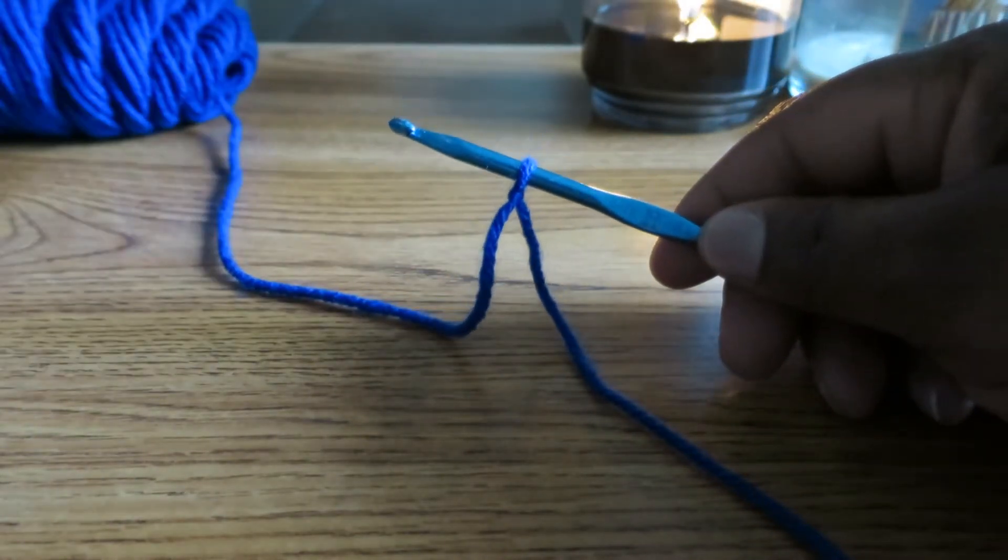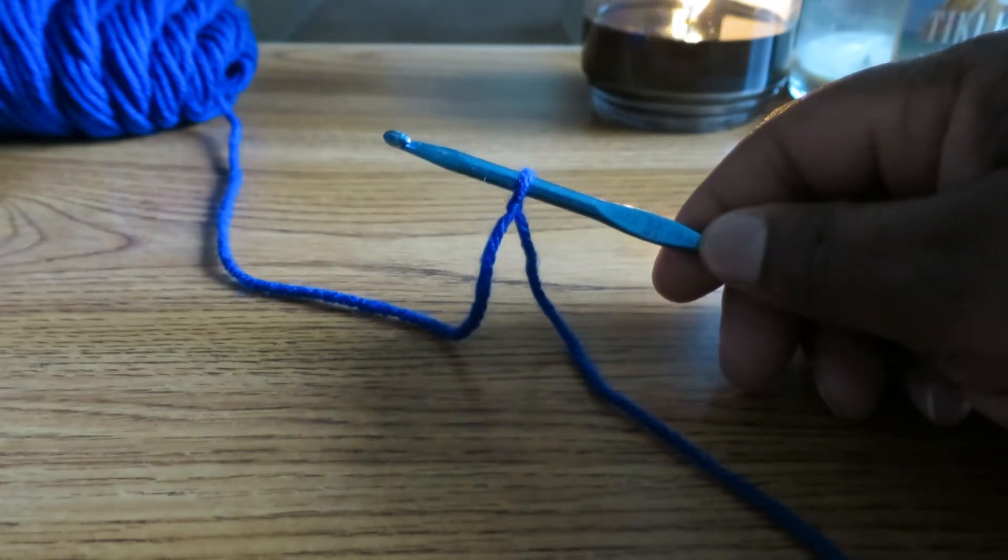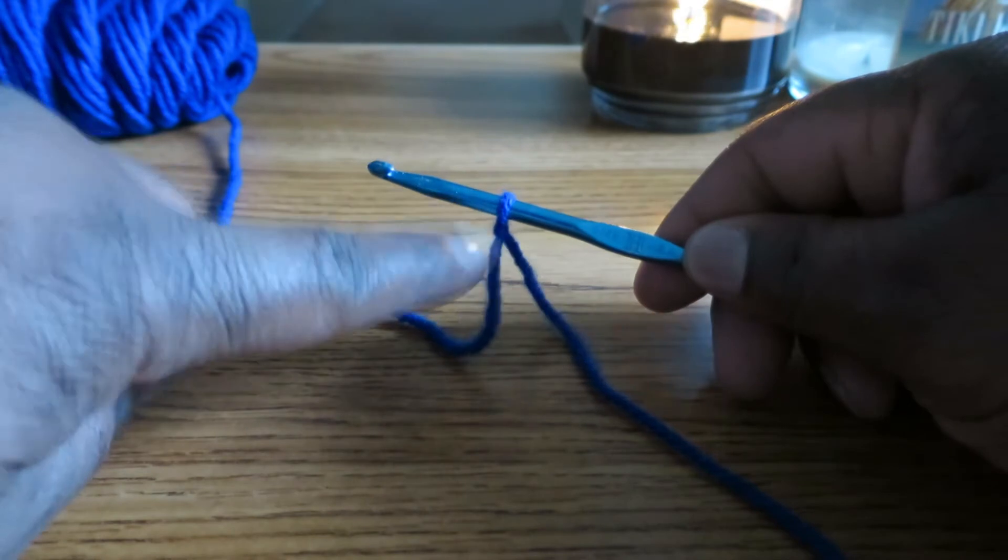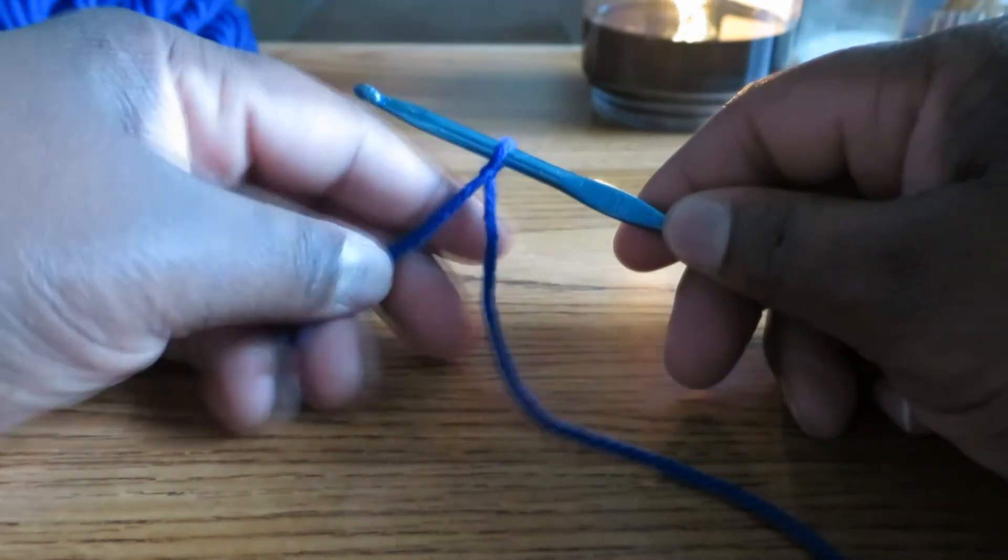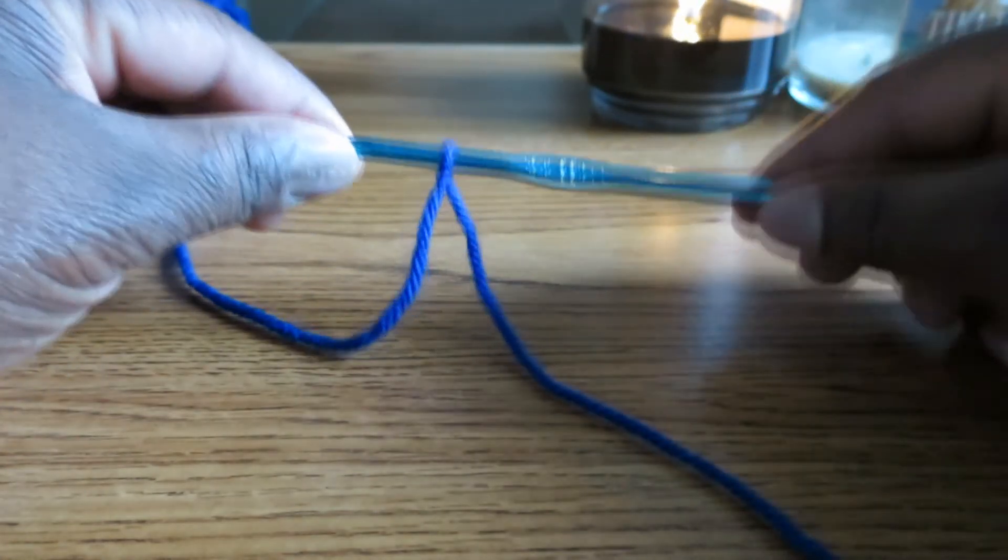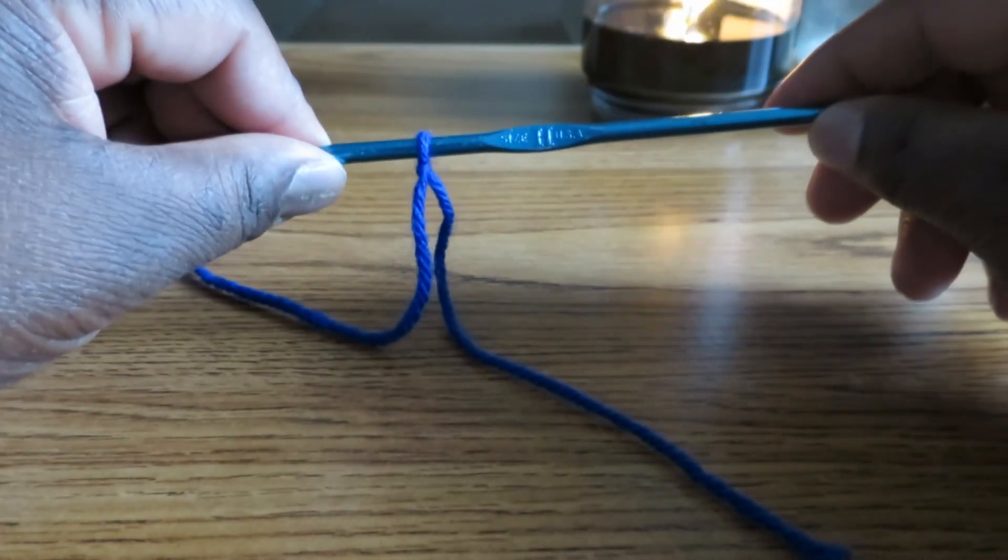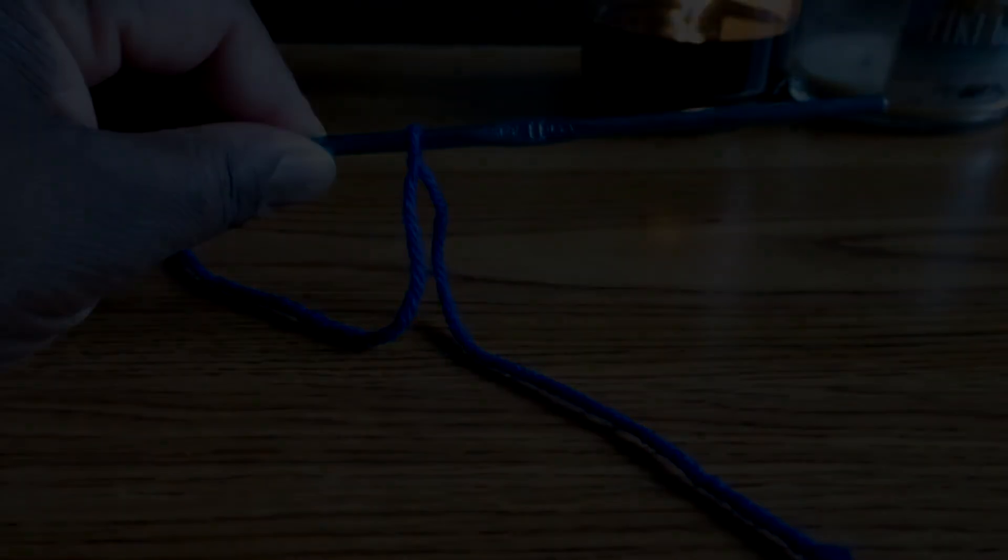We use slipknot to begin a lot of crochet projects. In fact, when we get to making the chain stitches, which will be the first stitch that I teach you, we're going to have to make a slipknot before we start chaining. So that is how you make a slipknot. I hope this tutorial was helpful and I'll see you in the next video.